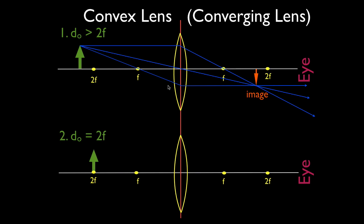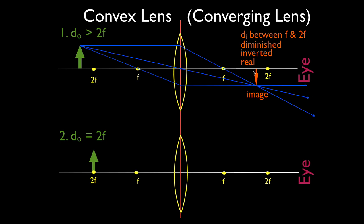We want to summarize the image information. When the object is greater than 2f away, the image will always be somewhere between f and 2f. The image will always be smaller than the object, always inverted or upside down, and always a real image. To review: we drew the parallel-F ray, then the F-parallel ray — which must go through F and come out parallel to the principal axis — and the third ray goes straight through the center of the lens, not bent or refracted. The image is located where those three rays intersect.